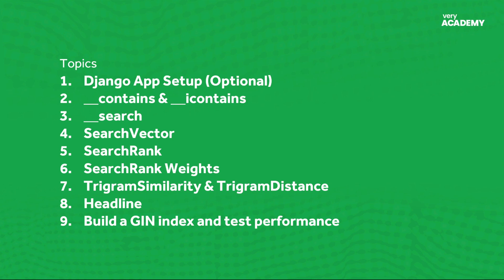From the topics, you can see that we're going to start with contains and iContains, and we go through it step-by-step, slowly moving into more proprietary aspects of Postgres. We move to search, with a bit of theory about what's going on behind the scenes. We move on to search vectors, search ranking and weights, then trigram similarity and distance, and then finish off with headline. The final stage moves into indexes — we'll build a GIN index using Django and Postgres, which will help the performance of our search.